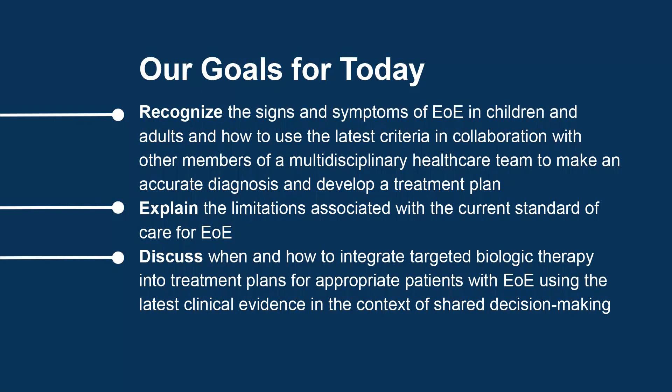Our learning objectives today are as follows. Number one, recognize the signs and symptoms of EOE in children and adults and how to use the latest criteria in collaboration with other members of a multidisciplinary health care team to make an accurate diagnosis and develop a treatment plan. Number two, explain the limitations associated with the current standard of care for EOE. And number three, discuss when and how to integrate targeted biologic therapy into treatment plans for appropriate patients with EOE using the latest clinical evidence in the context of shared decision-making.